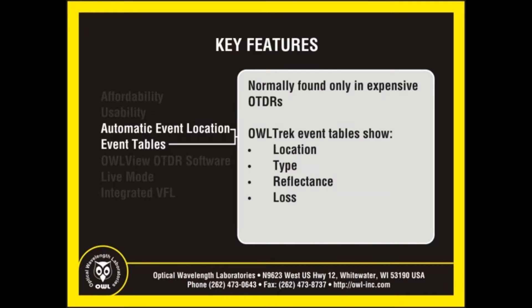Automatic event location is an advanced feature normally found in expensive high-end OTDRs. The Owltrek OTDR now brings this feature to the pocket OTDR market. The Owltrek OTDR includes an event table showing the location, type, reflectance level, and loss of each event. Users can select an event to view and automatically zoom in on the event on the OTDR display.